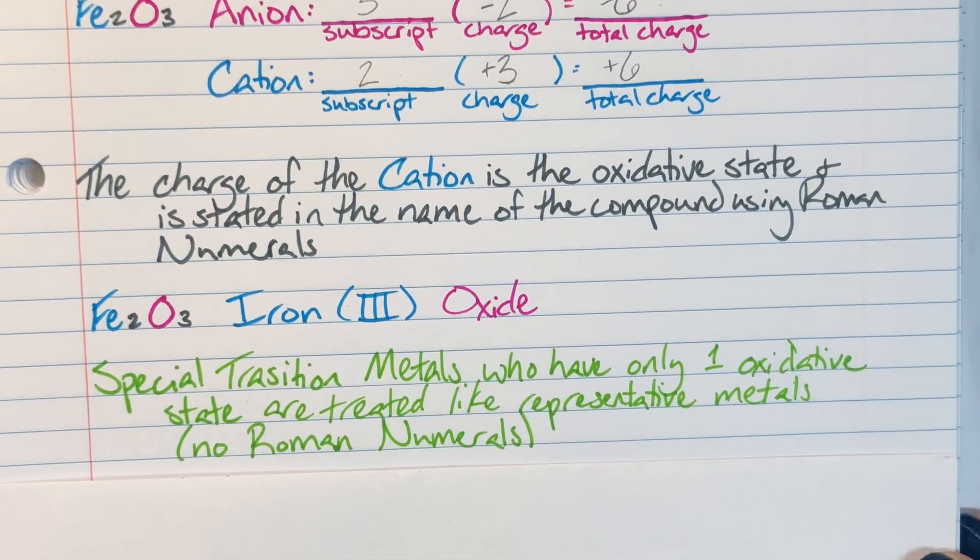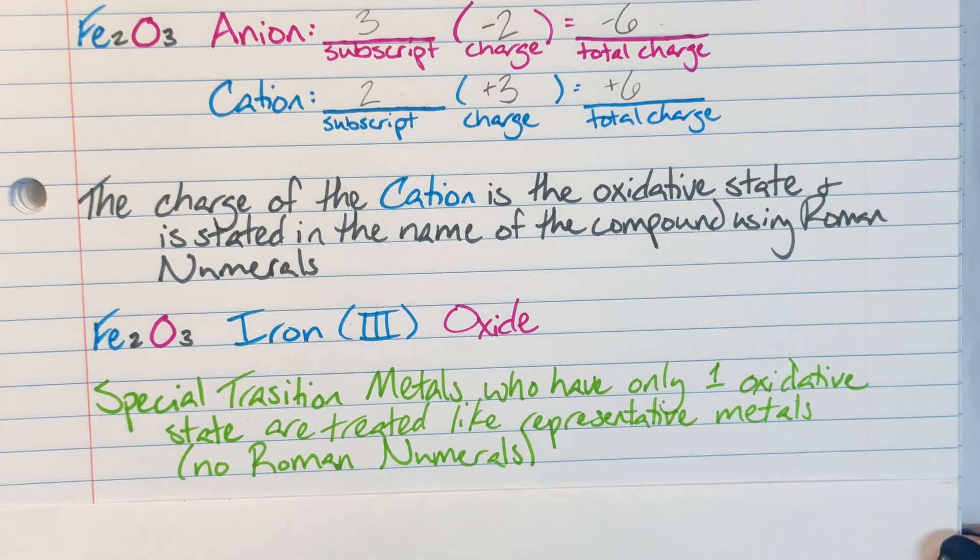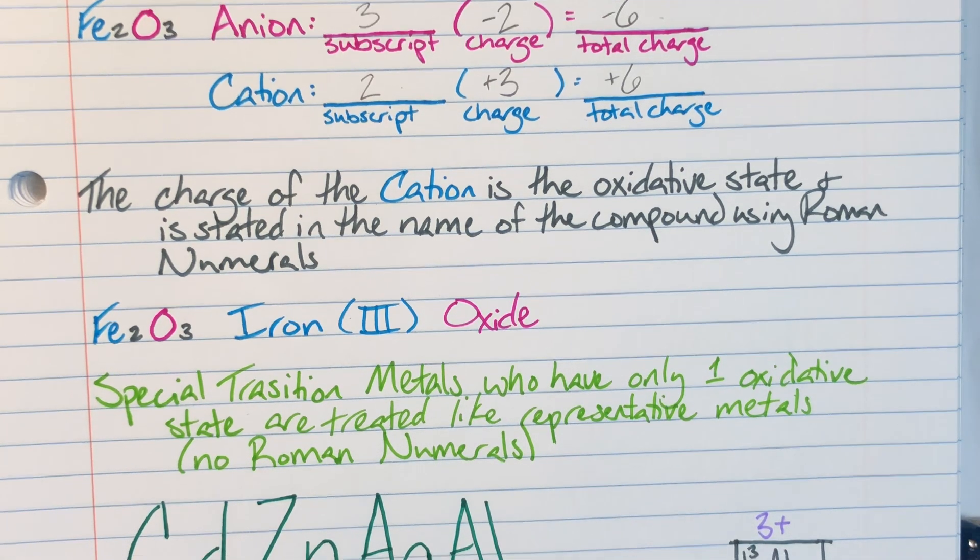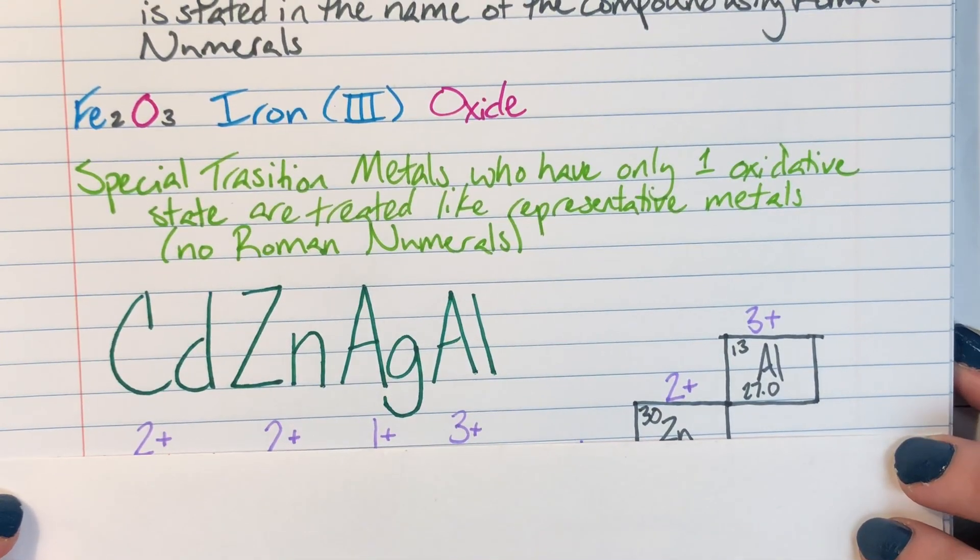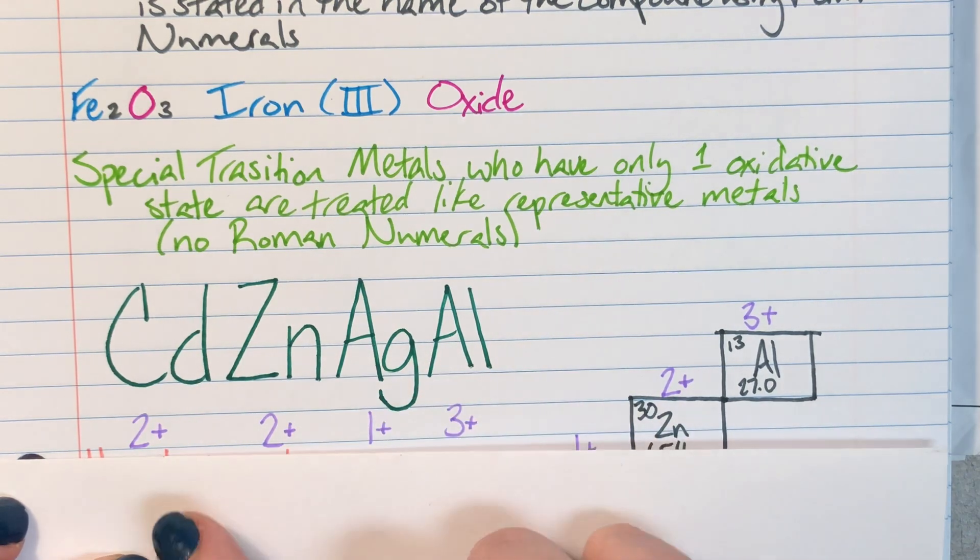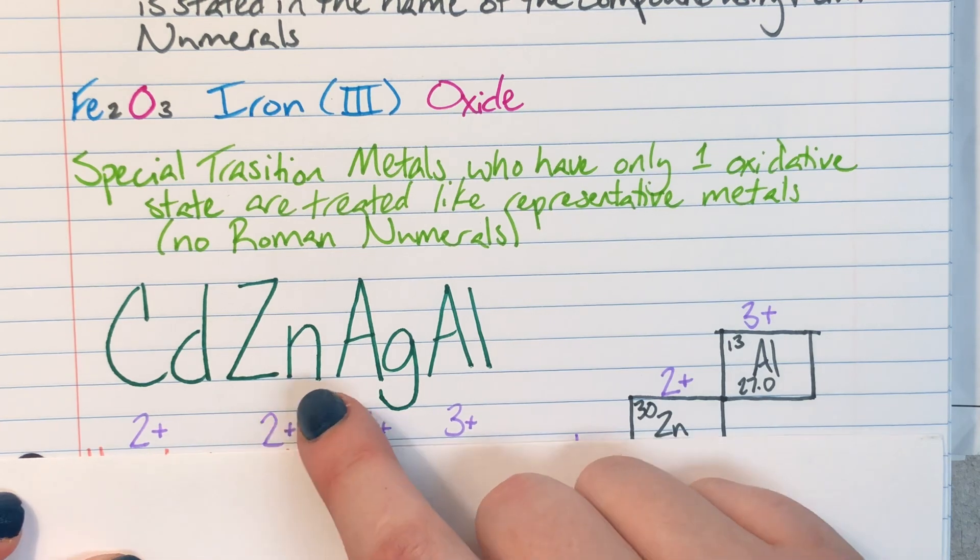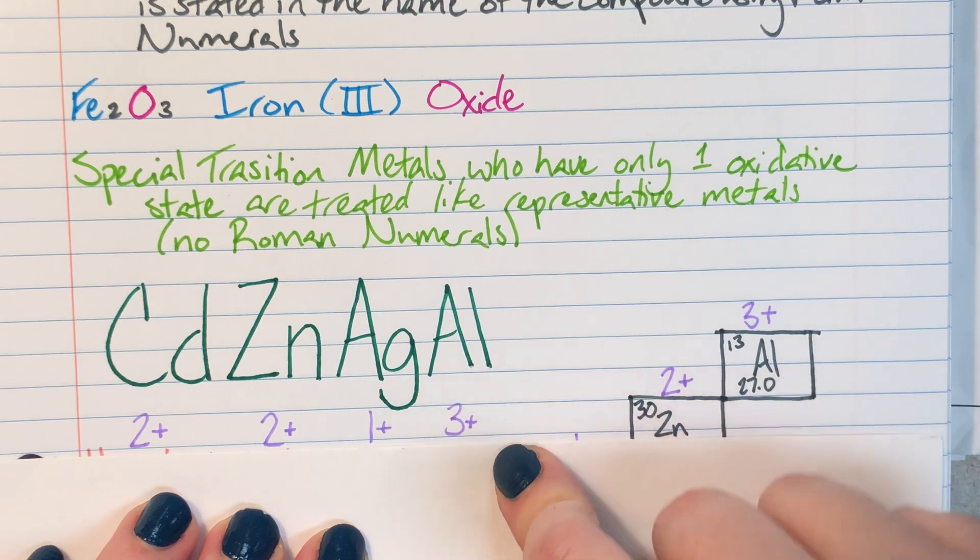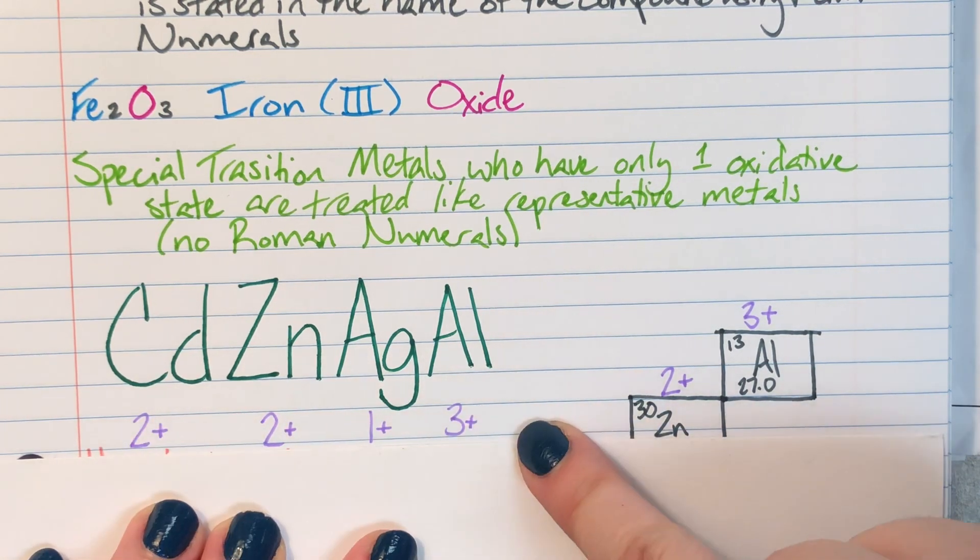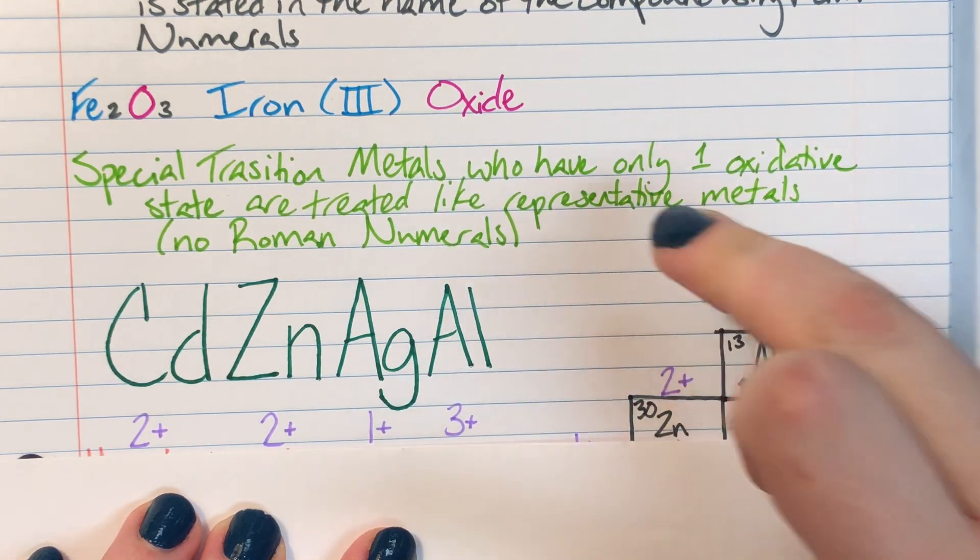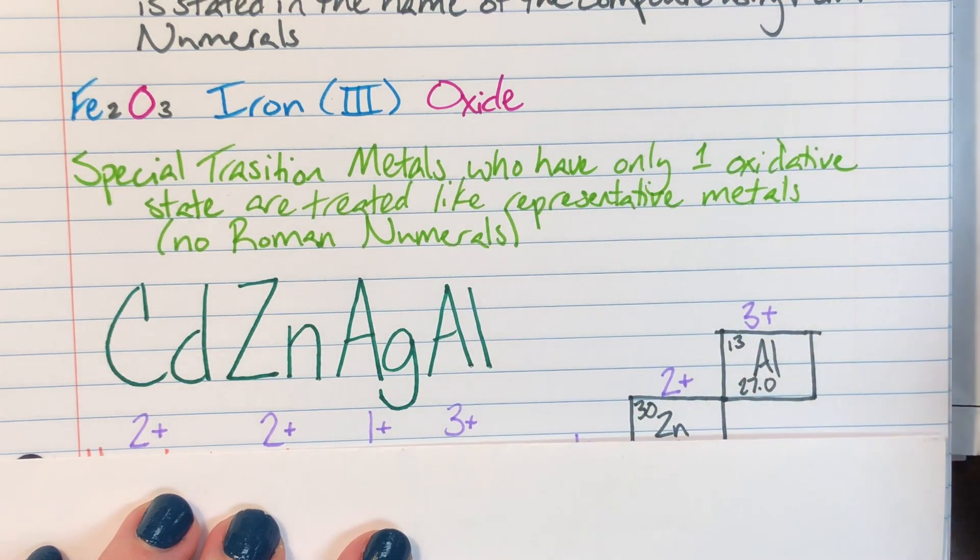I do have some special transition metals who don't like to be treated as if they do not deserve our trust. And those special transition metals can be summarized as CADZNAGL. That is a shorthand for them. That is going to be cadmium, zinc, silver, and aluminum. Cadmium always has a charge of plus two. Zinc always has a charge of plus two. Silver always has a charge of plus two. And aluminum always has a charge of plus three. Since they always have these charges, they get to be treated as if they were a representative metal. Which means I am not going to give you any Roman numerals at all.